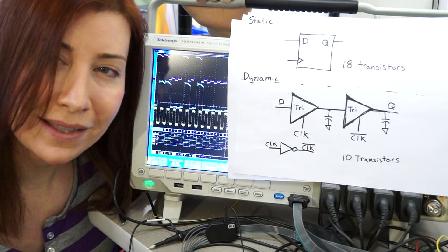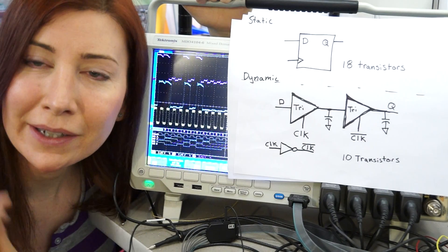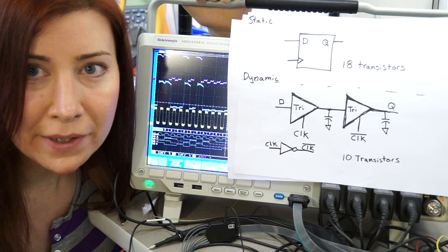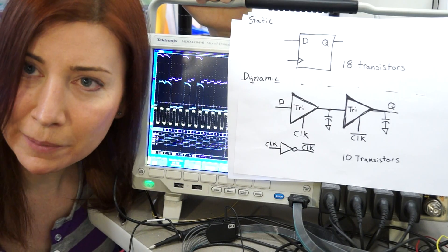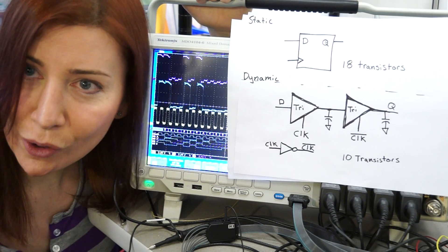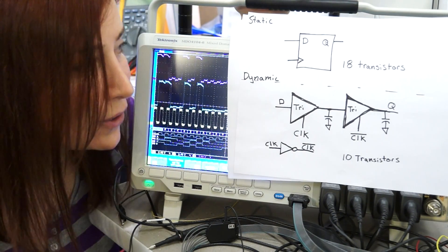So a flip-flop is a device that can store a state or a bit for one clock cycle or more. A static flip-flop is a device that you can remove the clock from it or suspend the clock, and it will retain its state indefinitely, assuming no cosmic rays come through and cause the bits to flip or the power rails go away.